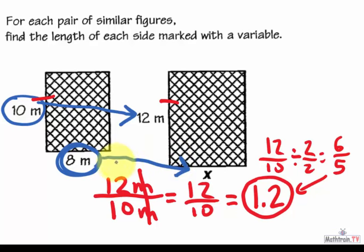So I need to multiply 8 by 1.2, just like I multiplied 10 by 1.2. So 1.2 times 8 is 9.6. Therefore, the value of x is 9.6 meters.